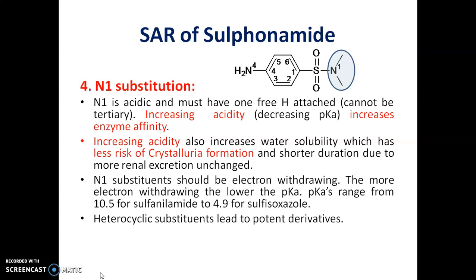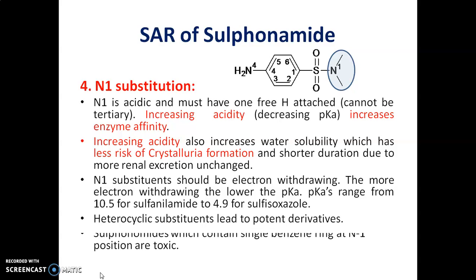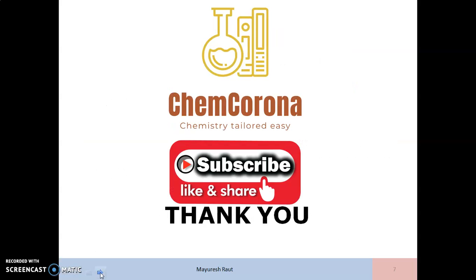Heterocyclic substituents on N1 lead to potent derivatives. Whereas Sulphonamides which contain a single benzene ring at N1 positions are toxic. Thank you for patient listening and happy learning. Like, share and subscribe to my channel ChemCorona.